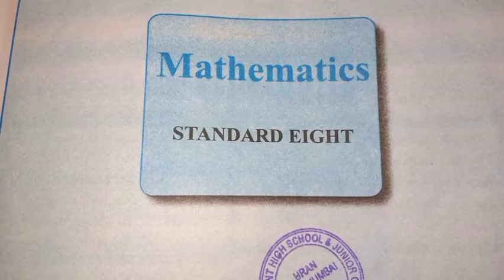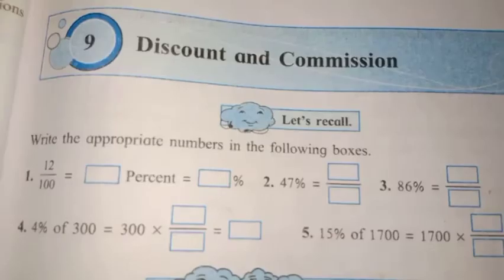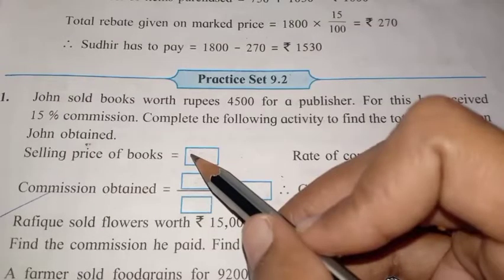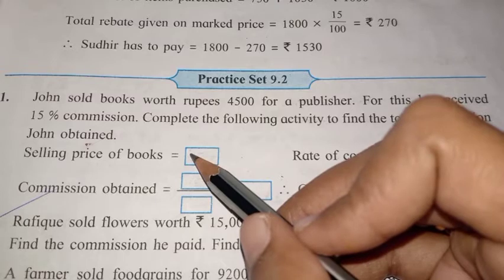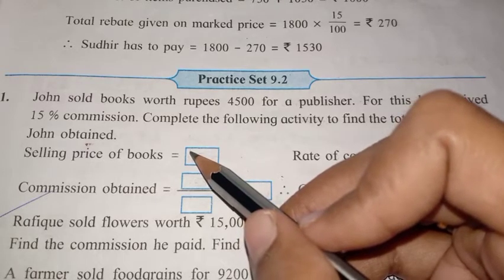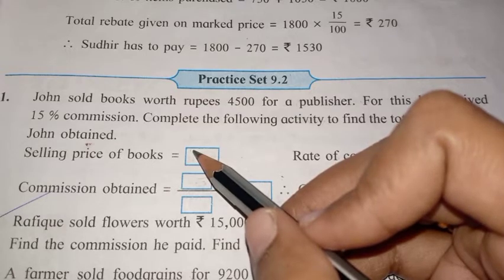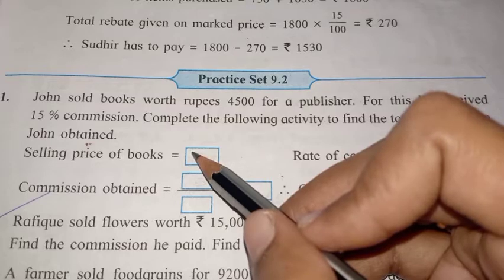Standard 8 subject maths, lesson number 9: Discount and Commission. In the previous video we completed practice set 9.1 and discussed what commission is, what a commission agent is, and what rebate is. Today we'll start practice set 9.2.